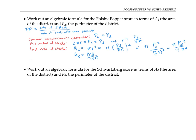Finally, let's calculate the Polsby-Popper ratio. We have Polsby-Popper equals the area of the district, A_d, divided by the area of the circle, which is P_d² / (4π). Flipping and multiplying gives A_d × 4π / P_d², or in other words, four pi times the area of the district over the perimeter of the district squared. Now we have the formula for Polsby-Popper in terms of the area and perimeter of the district.